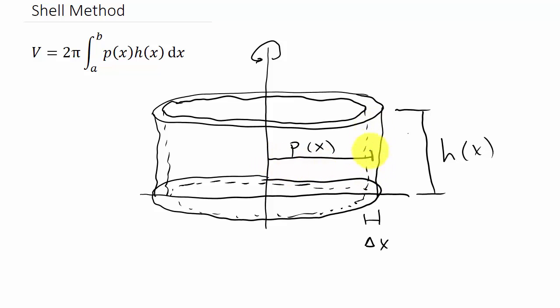h(x) is the height of the shell. And then dx, that's the thickness or delta x - that's the thickness of the shell.